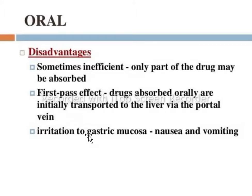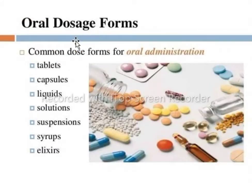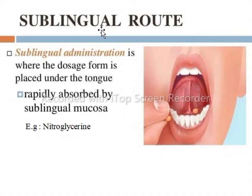Due to first pass effect, the oral route has less bioavailability because of food particles. It can also cause gastric irritation, nausea, and vomiting, because all drugs cannot tolerate the acidic pH of the stomach — for example, insulin, which loses its stability due to acidic pH because insulin is an acid-sensitive drug. Common oral dosage forms include tablets, capsules, liquid solutions, suspensions, syrups, and elixirs.